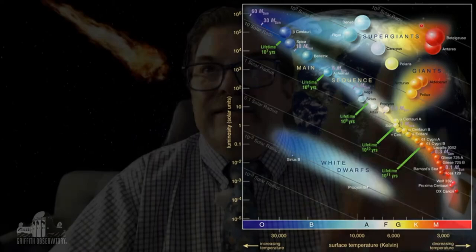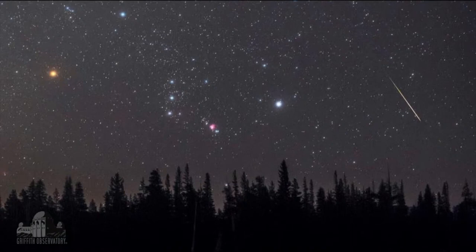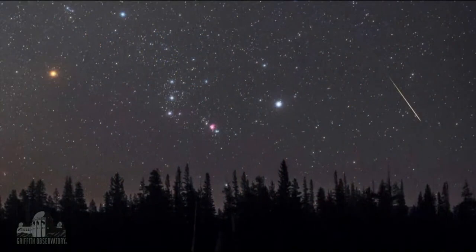Betelgeuse is in the shoulder of Orion. Orion is going to start being visible early in the morning. Normally I'd be at the Burning Man festival this time of year — it's not happening officially this year. We'd always know it was getting late in the night when we'd see Betelgeuse rise, and I'd think: when are you going to blow up?